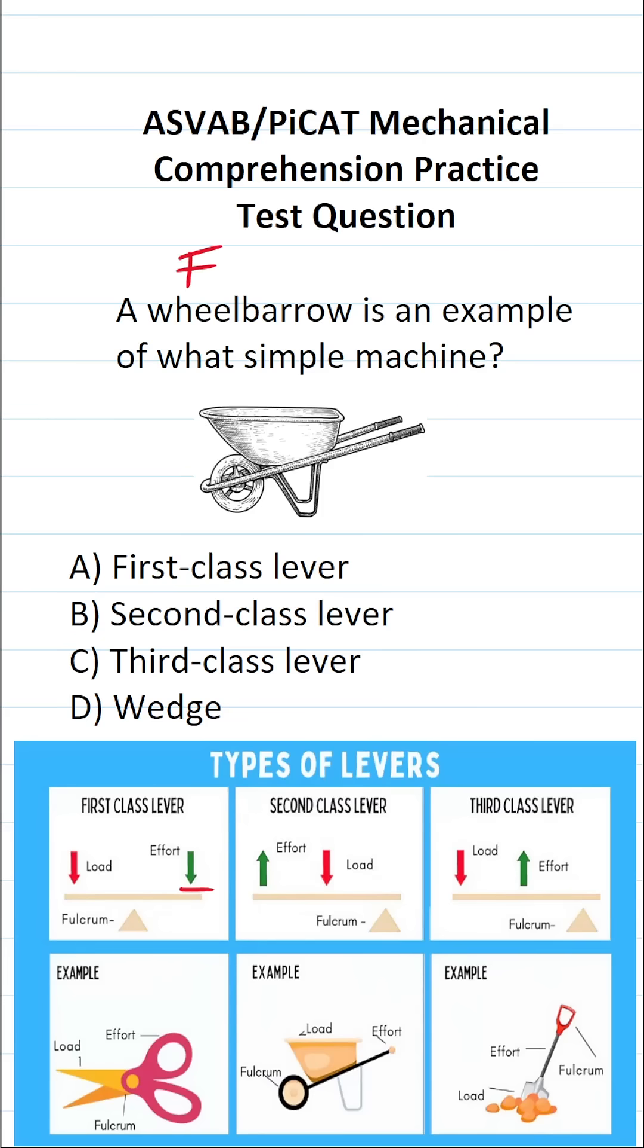They have the fulcrum, they have your load, and they have your effort. The fulcrum is the pivot point, so the fulcrum in our wheelbarrow is going to be right here. Here's where we load things up, so this is our load, and here's where we apply effort by lifting.